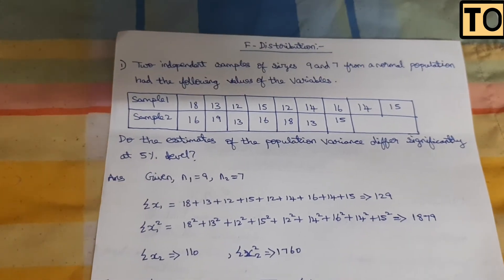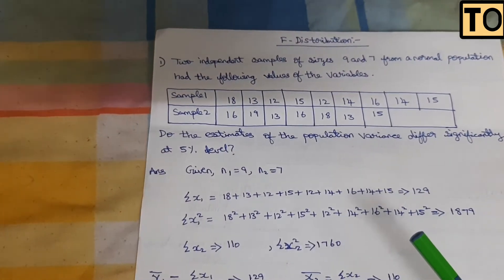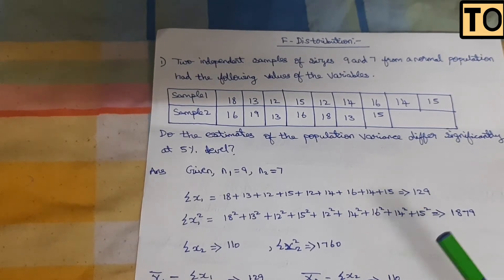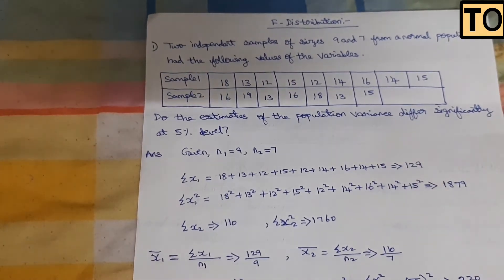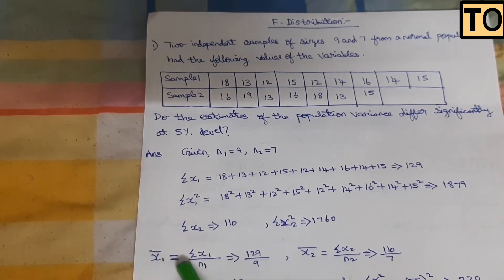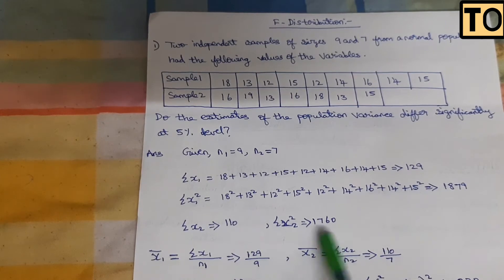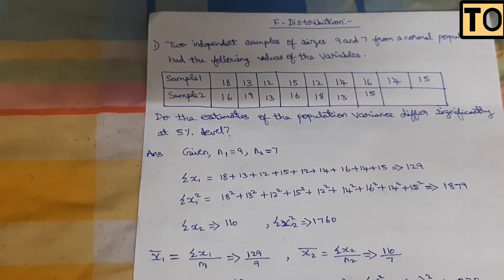What we will do is find x1 bar and x2 bar — that is the mean value. There is a formula for the large sample test: sigma x1 divided by n1, and sigma x2 divided by n2. This is the formula, and you will substitute values into it.